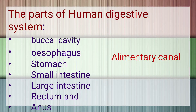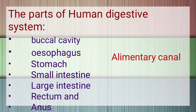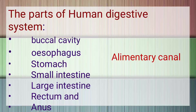Now we shall discuss about the parts of the human digestive system. The parts are: buccal cavity (that means oral cavity), esophagus, stomach, small intestine, large intestine, rectum and anus. This group comes under the alimentary canal. The alimentary canal is a muscular tube which extends from the mouth to the anus. The liver and pancreas are also part of the digestive system, but note that they do not belong to the alimentary canal.